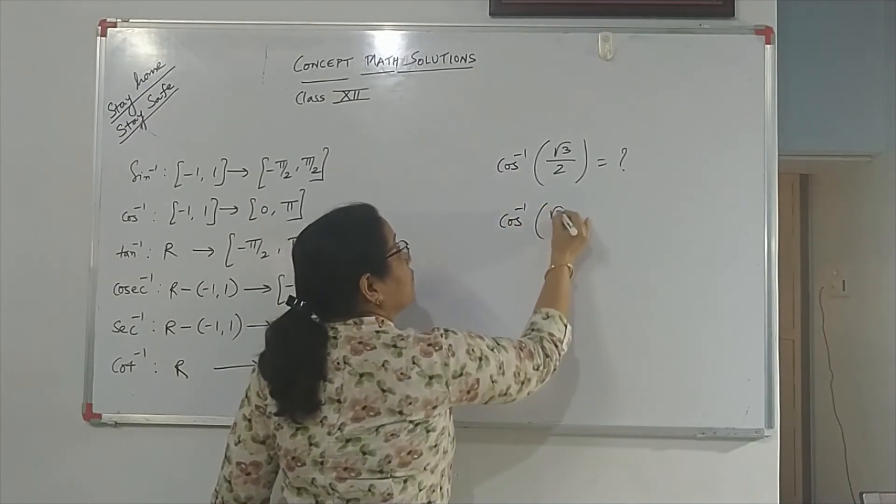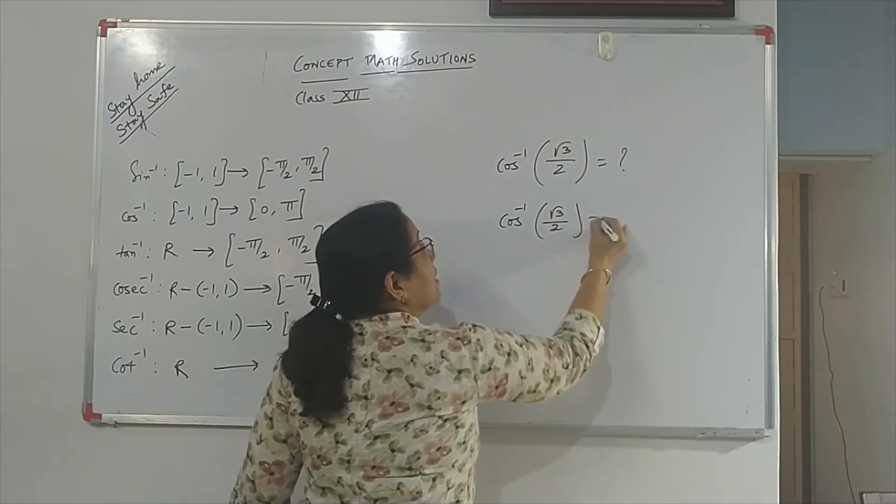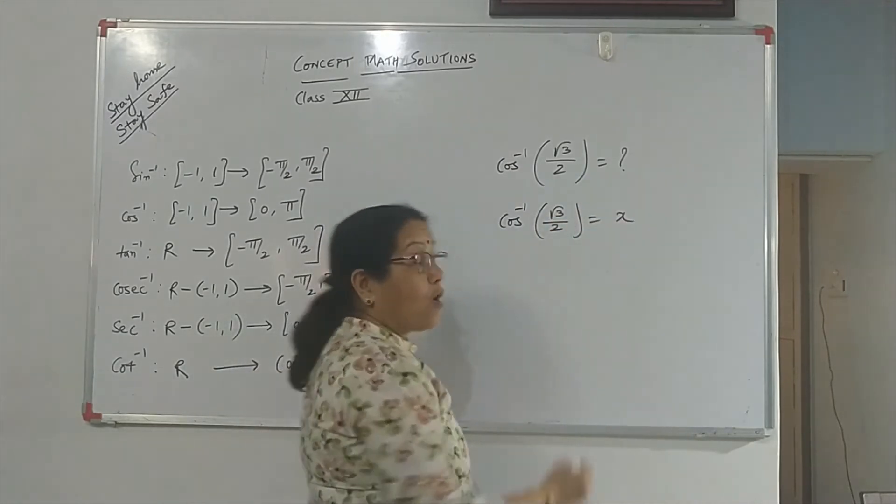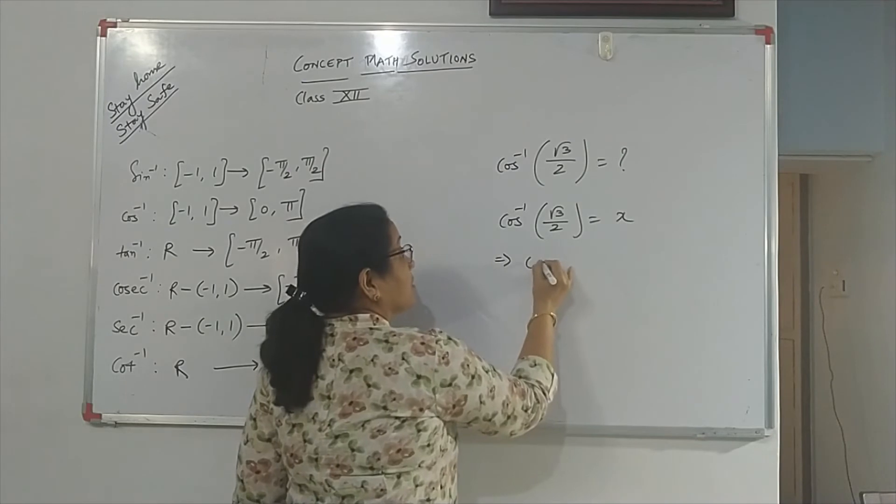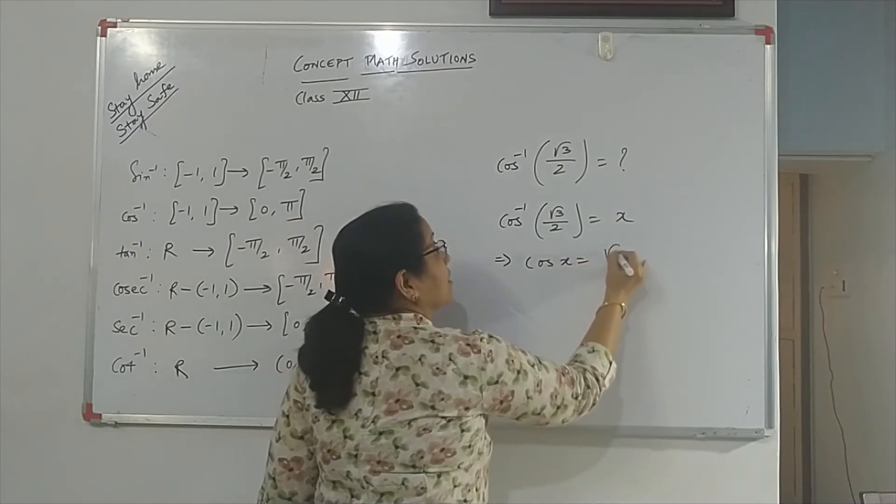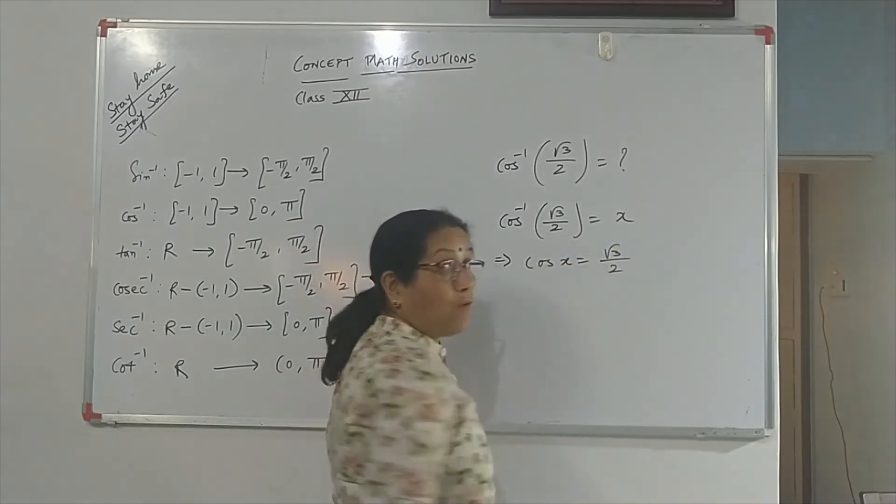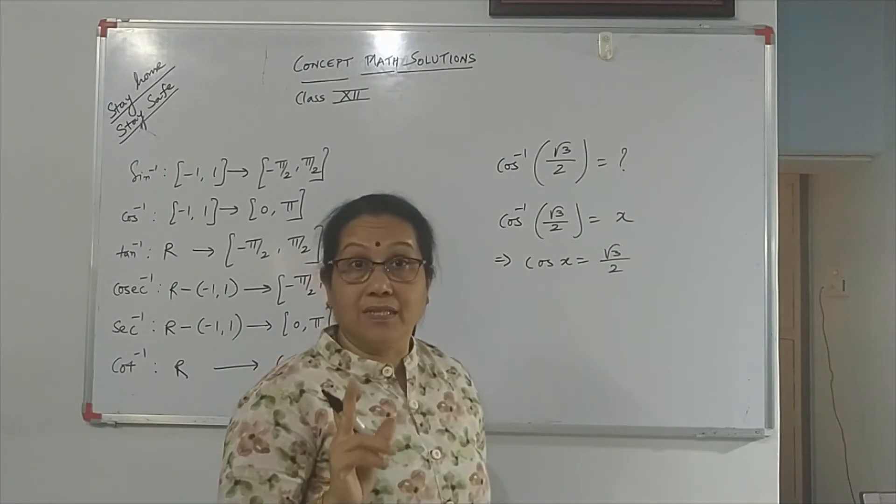We assume cos inverse of root 3 by 2 is, say, x. What does that mean? Cos x is root 3 by 2. Now, we want principle value branches.